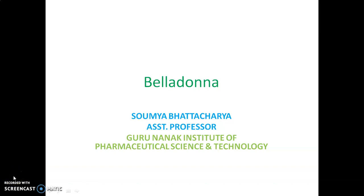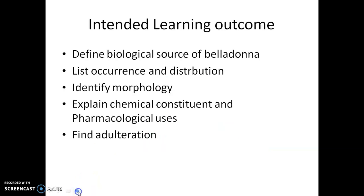Welcome learners. The topic of today's discussion is Belladonna, another important drug in the pharmacognosy syllabus of Diploma Part 1. After learning from this video, students will be able to define the biological source of Belladonna, list its occurrence and distribution, identify the morphology, explain chemical constituents and pharmacological uses.